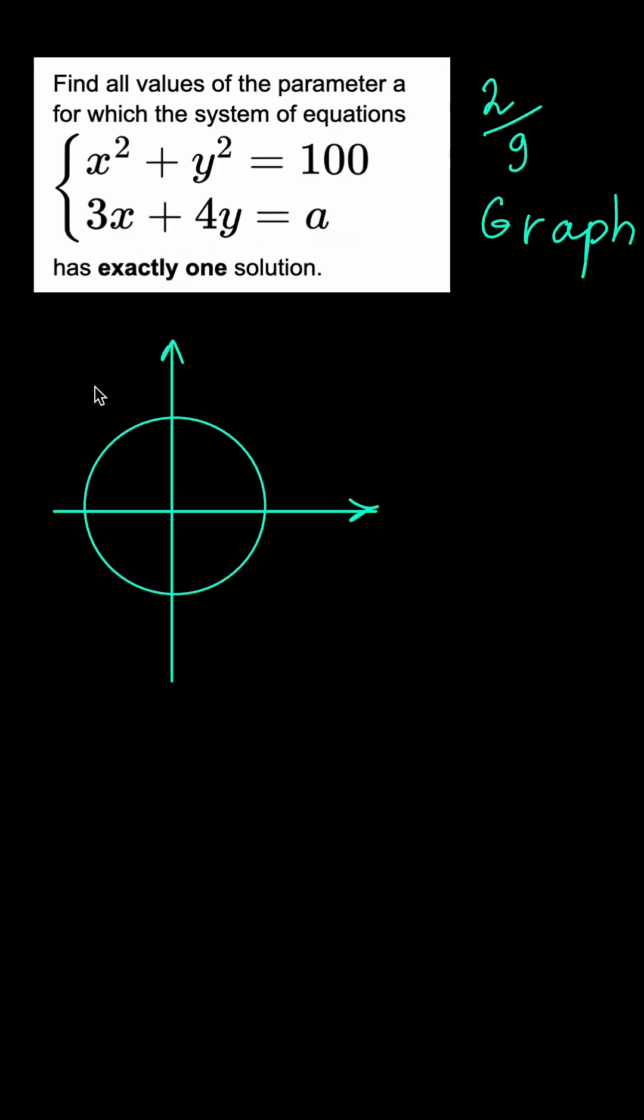The second equation represents a line which, depending on the parameter A, shifts up and down, remaining parallel to itself.